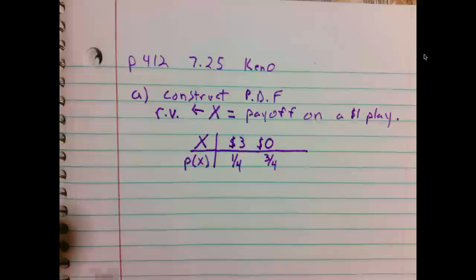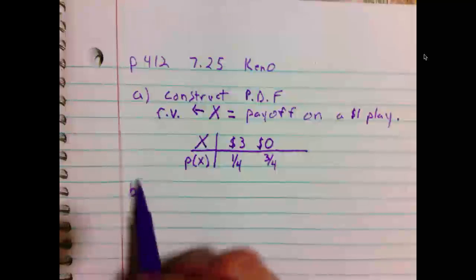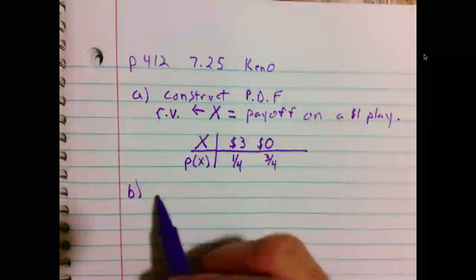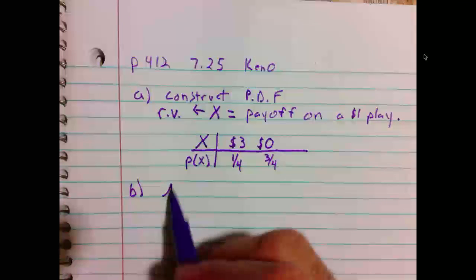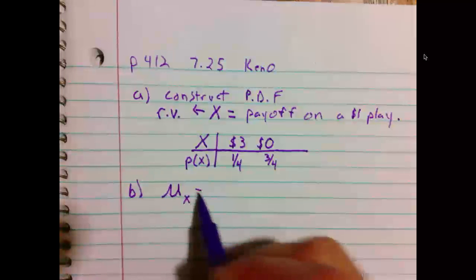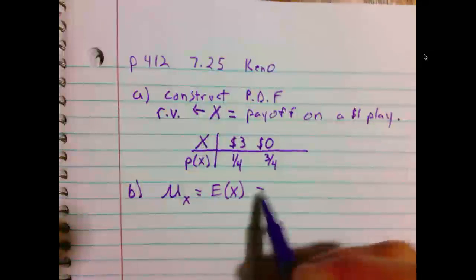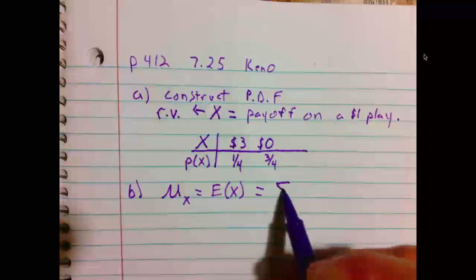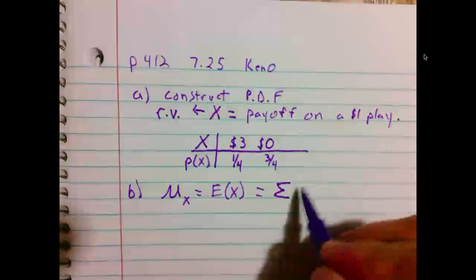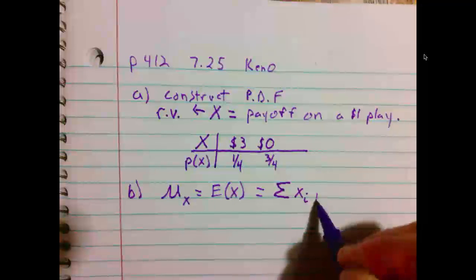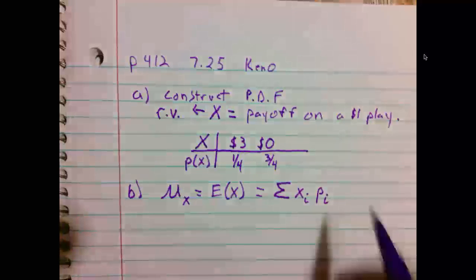Part B says, what is the mean payoff, mu of X? Well, mu of X, also called the expected value of X, E of X, is equal to, this is off our formula chart, it's the sum of each X, we say X sub I, times the associated probability, P sub I.